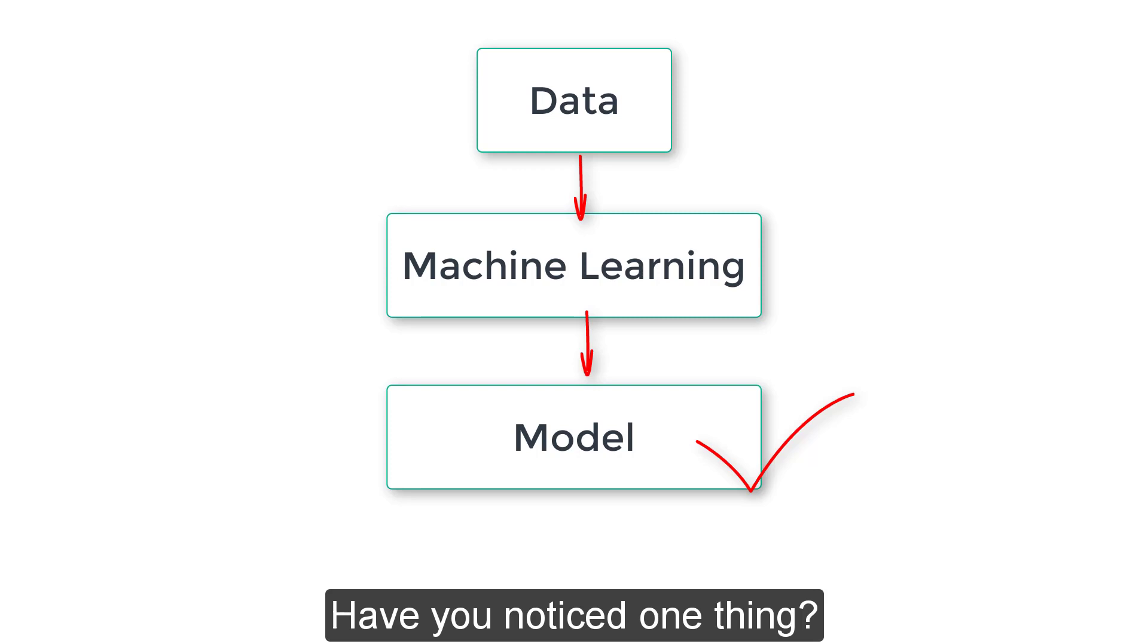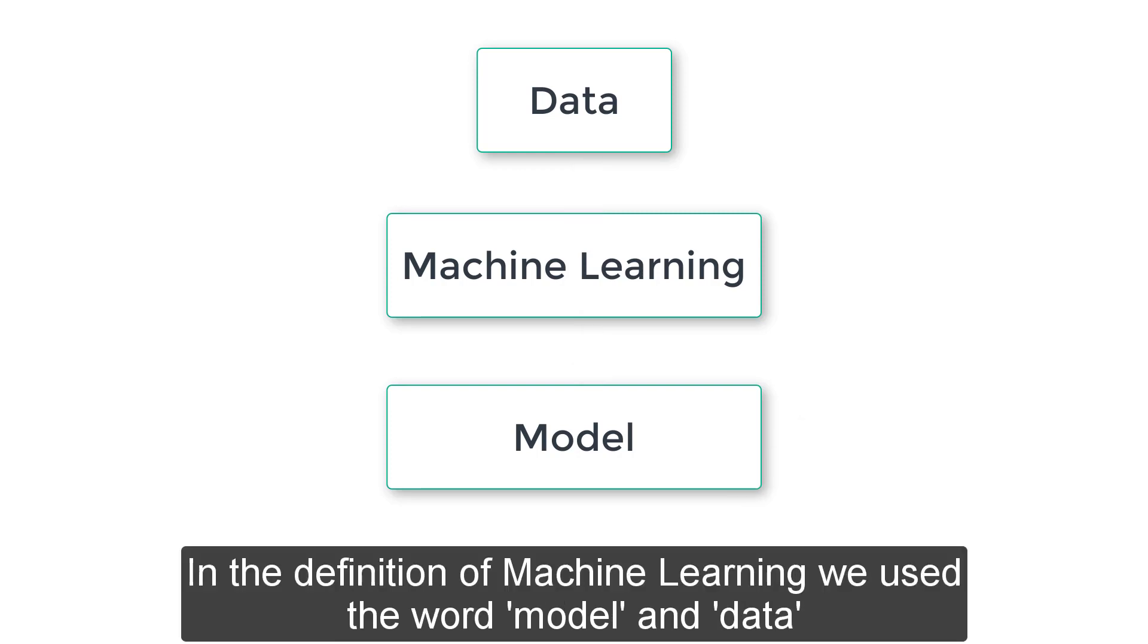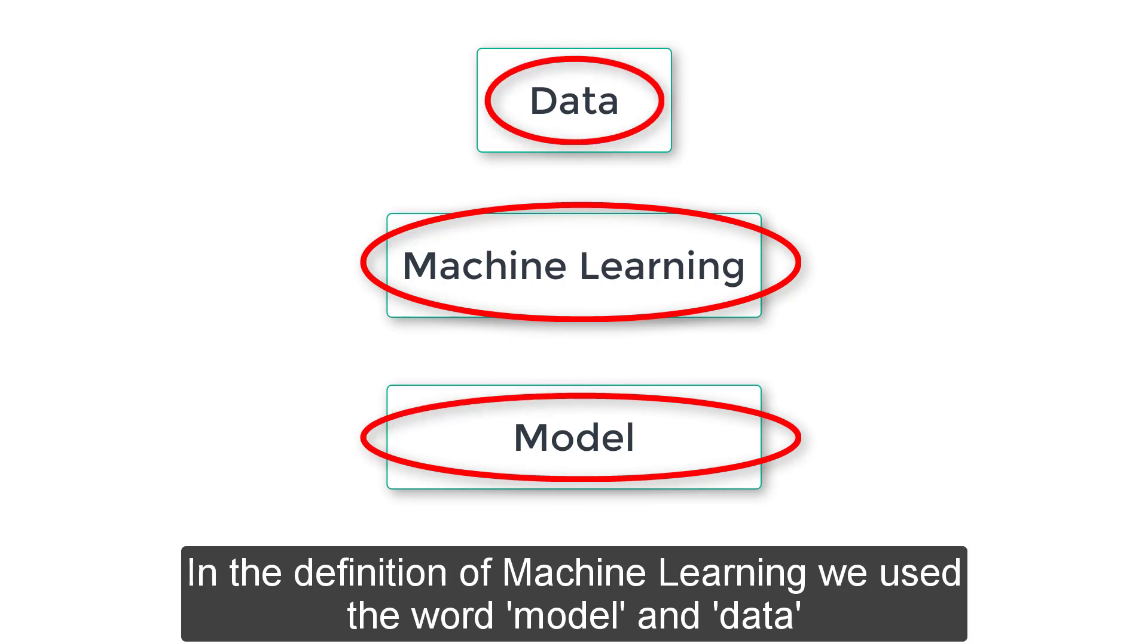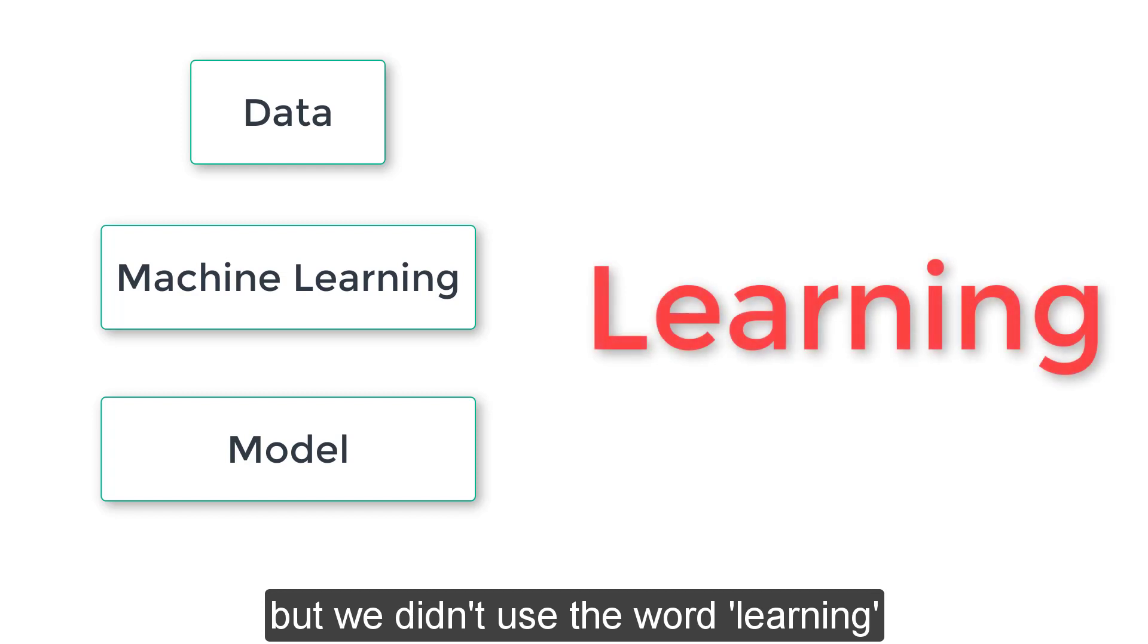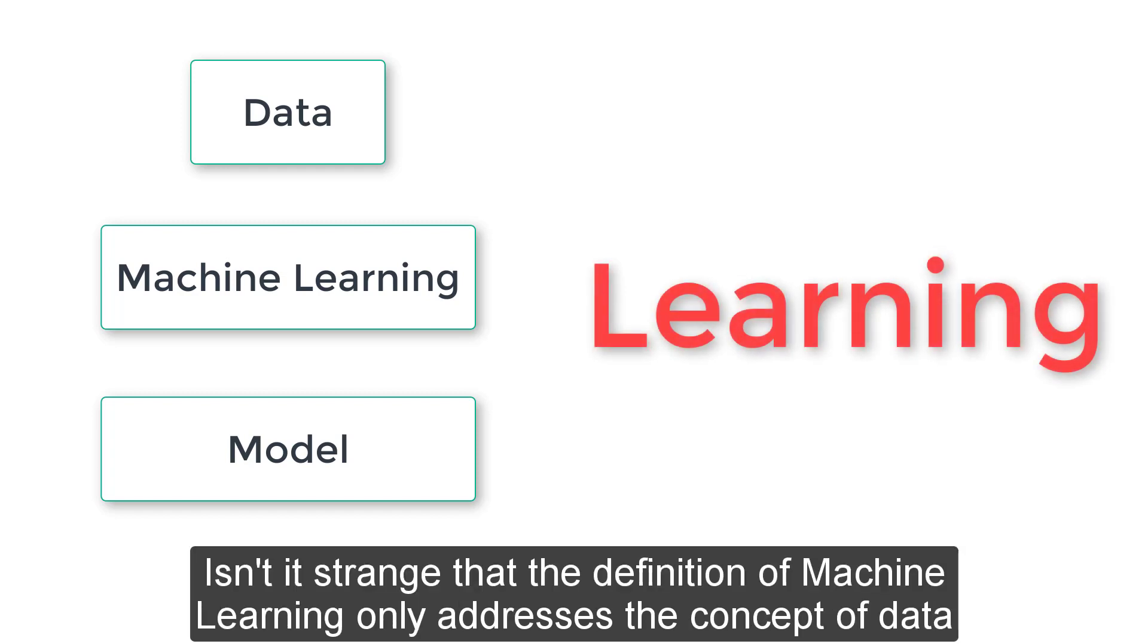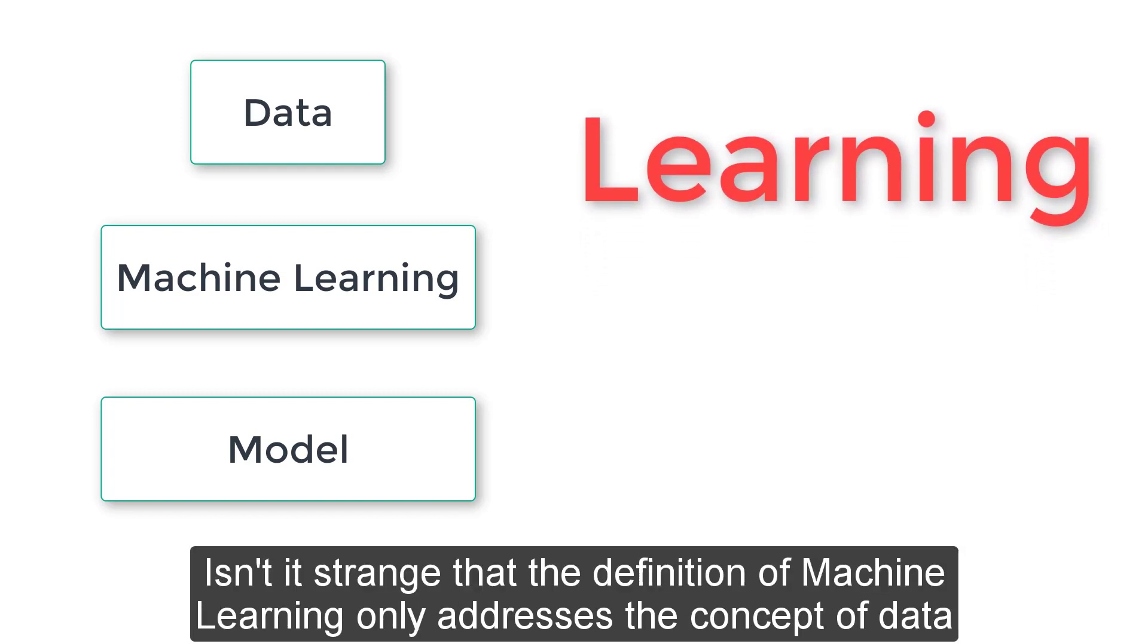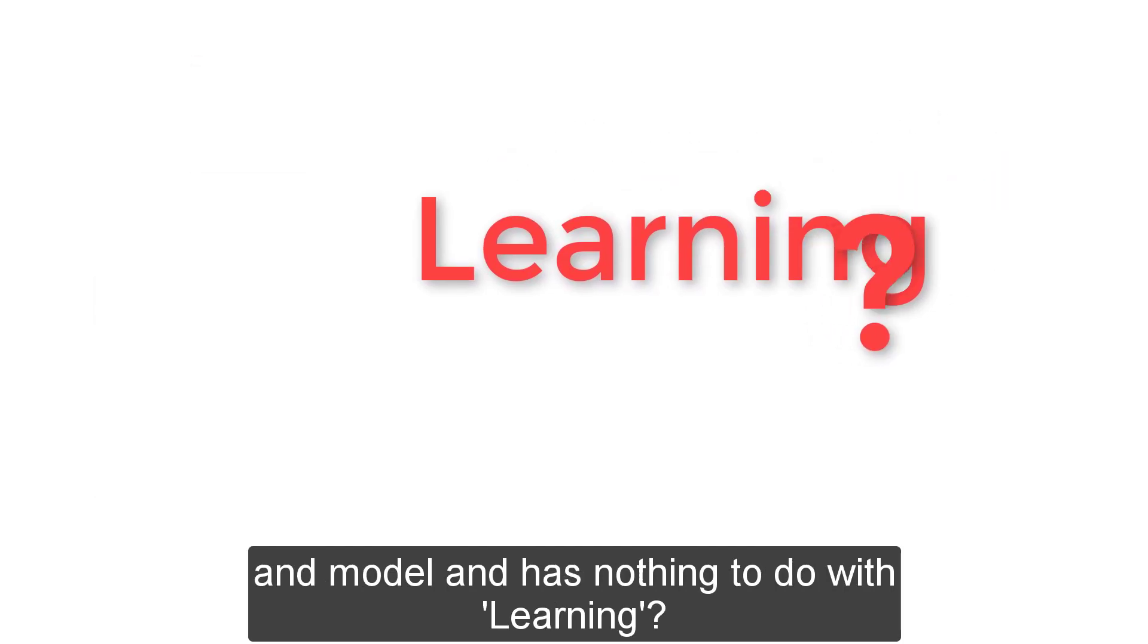Have you noticed one thing? In the definition of machine learning, we used model and data, but we didn't use the word learning. Isn't it strange that the definition of machine learning only addresses the concept of data and model and has nothing to do with learning?